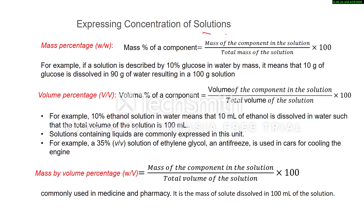There are several ways to express the concentration of solutions. The first is mass percentage (w/w): we take the mass of solute and mass of solution. Mathematically, mass percentage equals mass of the component (solute) divided by total mass of the solution, multiplied by 100. For example, 10% glucose in water by mass means 10 grams of glucose dissolved in 90 grams of water, giving 100 grams of solution.